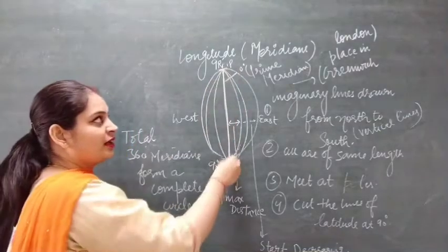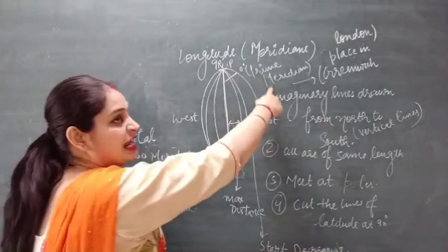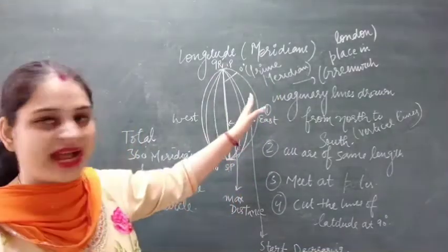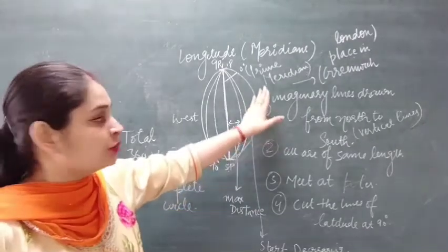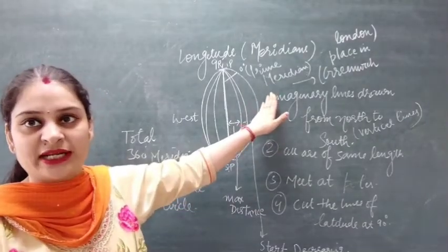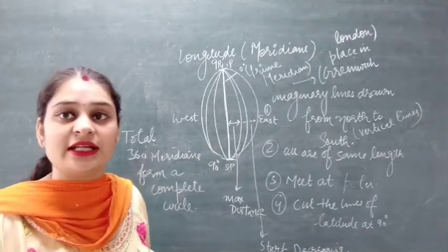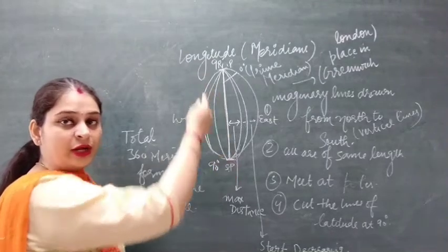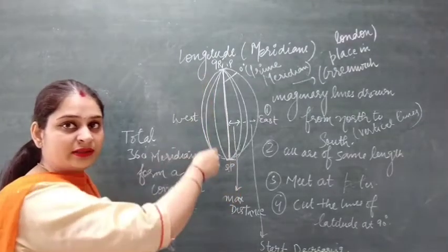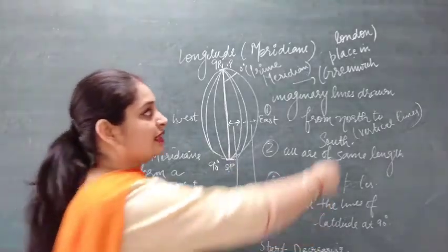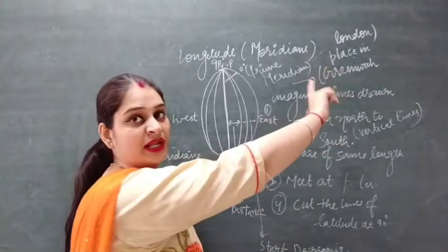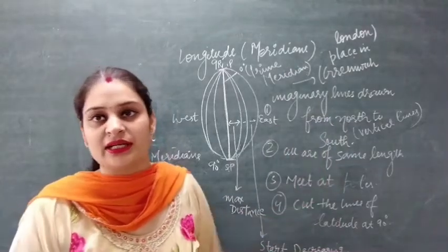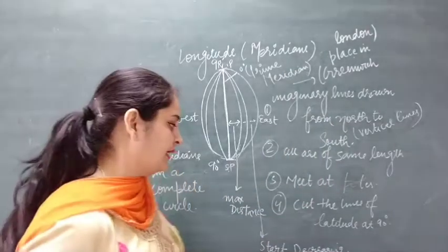The 0 degree longitude is called the Prime Meridian. The other name for the Prime Meridian is the Greenwich Meridian. The reason behind this is that while locating this meridian, the line passes through a place in London called Greenwich. That is why the Prime Meridian is also known as the Greenwich Meridian.